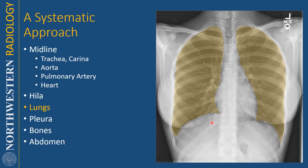Once I've evaluated one lung, I zoom out and look at both lungs to look for symmetry — making sure they're the same density, the same size generally (usually the left is a little bit smaller because of the heart orientation), and that the vessel arborization is about the same.